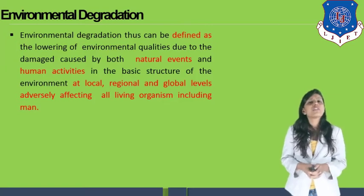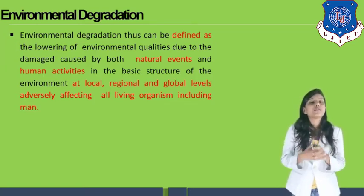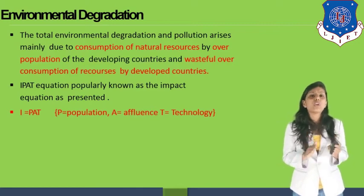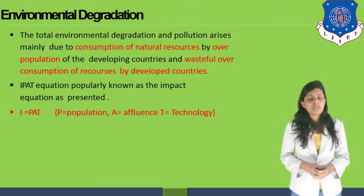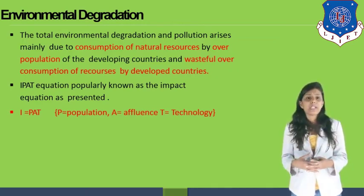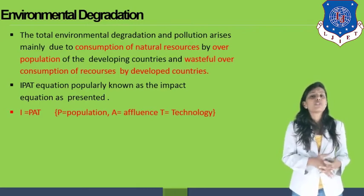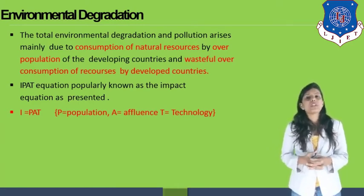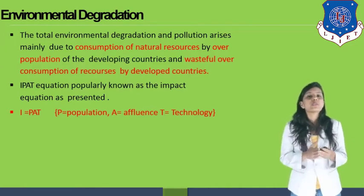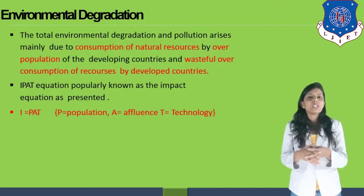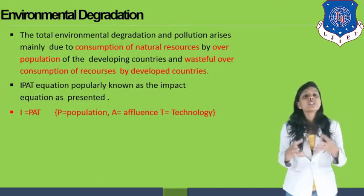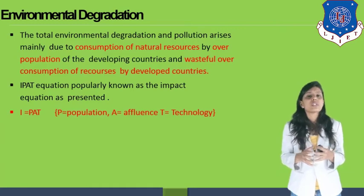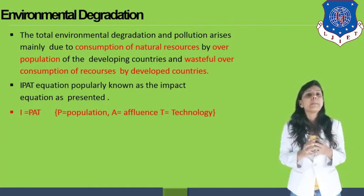Forest fires and volcanic eruptions are part of natural degradation of the environment. But humans are affecting the environment the most. The total environmental degradation and pollution arises mainly due to consumption of natural resources by the overpopulation of developing countries and the wasteful overconsumption of resources by developed countries. The IPAT equation, popularly known as the impact equation, is presented here: I equals P times A times T, where P is population, A is affluence, and T is technology.